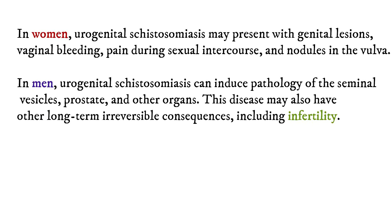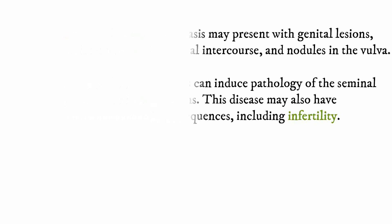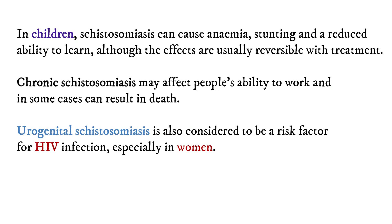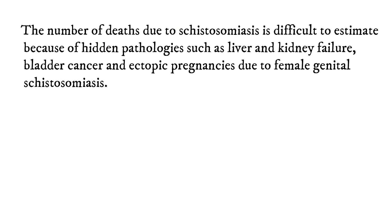In men, urogenital schistosomiasis can induce pathology of the seminal vesicles, prostate, and other organs. This disease may also have other long-term irreversible consequences, including infertility. In children, schistosomiasis can cause anemia, stunting, and a reduced ability to learn, although the effects are usually reversible with treatment. Chronic schistosomiasis may also affect people's ability to work and in some cases result in death. Urogenital schistosomiasis is also considered to be a risk factor for HIV infection, especially in women. The number of deaths due to schistosomiasis is difficult to estimate because of hidden pathologies such as liver and kidney failure, bladder cancer, and ectopic pregnancies due to female genital schistosomiasis.